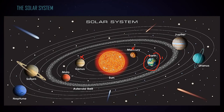For Mars there are about two moons. Jupiter has about 16 moons. Saturn has about 20 moons. Uranus has about 15, and Neptune has 8 moons. So to summarize: Earth has one, Mars has two, Jupiter 16, Saturn 20, Uranus 15, and Neptune has 8 moons.